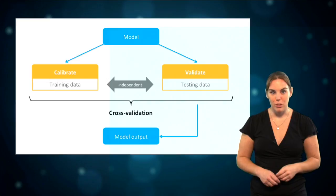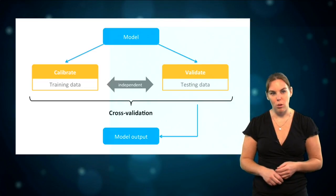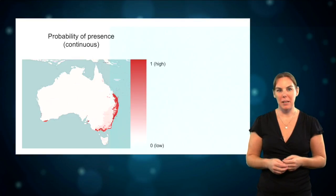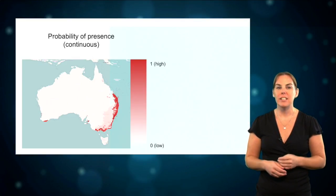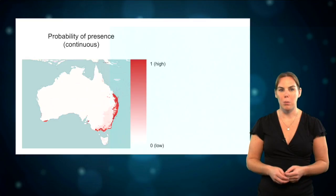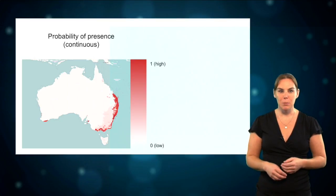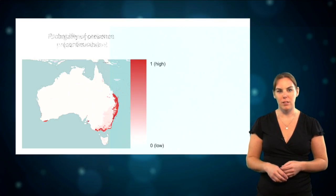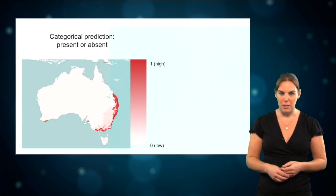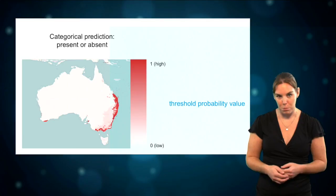The cross-validation approach averages the result of the test data of the different runs into a single probability score of species occurrence for each location on the map. Most algorithms produce this probability score as a continuous response, ranging from 0, which represents low probability of presence, to 1, which represents high probability of presence. To calculate the evaluation statistics, these probabilistic predictions are commonly converted to a categorical prediction — whether a species could be present or absent — based on a threshold value of the probability prediction.